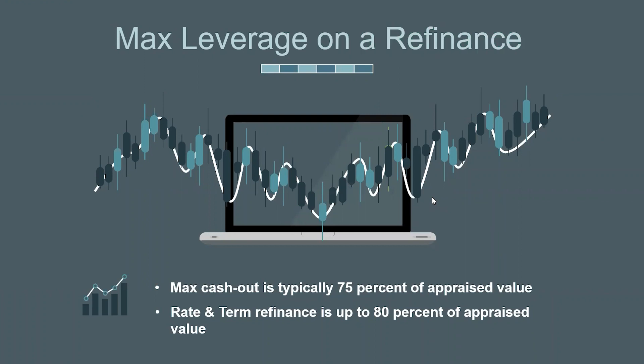Max leverage: typically 75% is the cash-out limit with most DSCR lenders. On a rate-and-term refinance, some allow you to go to 80%. If it's a duplex, triplex, or fourplex, there are different guidelines — some cap you at 70%, some will let you go to 75%. It's important to know this upfront, whether it's a single-family versus a small multi-unit like a duplex, triplex, or fourplex.